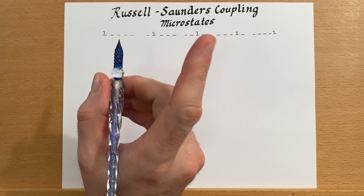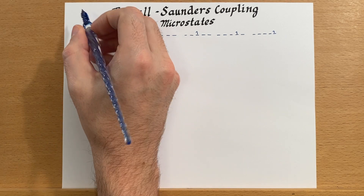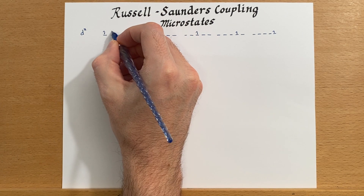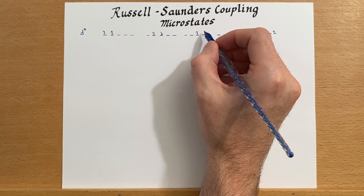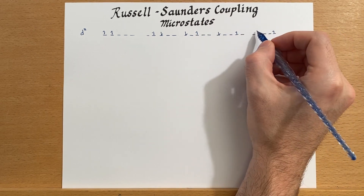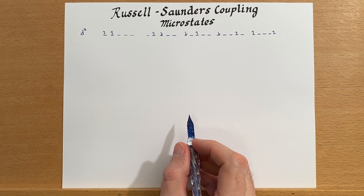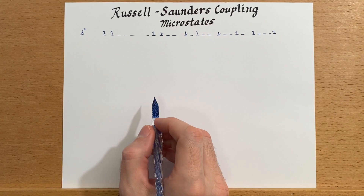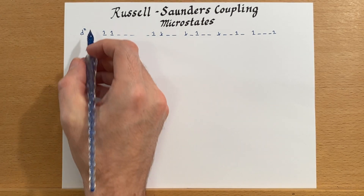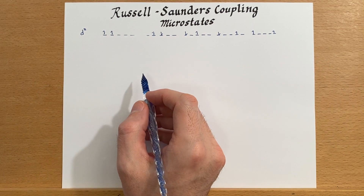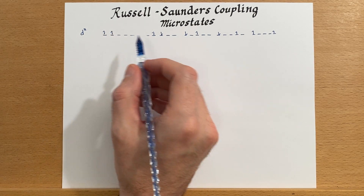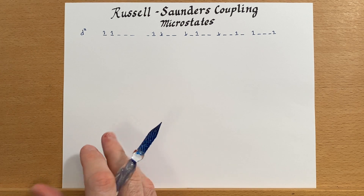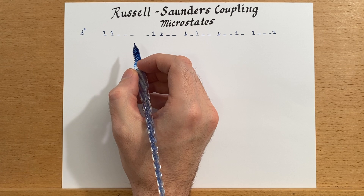What happens if we have 2 d electrons? We could try to determine all of the possible states by drawing them out, and you can do it, but it gets challenging — especially for a d orbital with five different positions. We could even have three or four electrons, and then the number of combinations becomes quite large, so we'll need a more systematic approach.